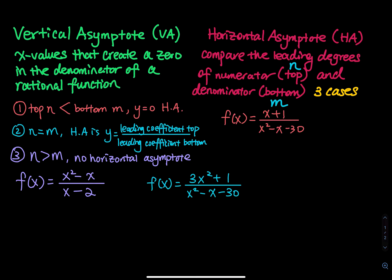Vertical asymptote and horizontal asymptote of a rational function. The vertical asymptote is the x value that creates a zero in the denominator of a rational function.